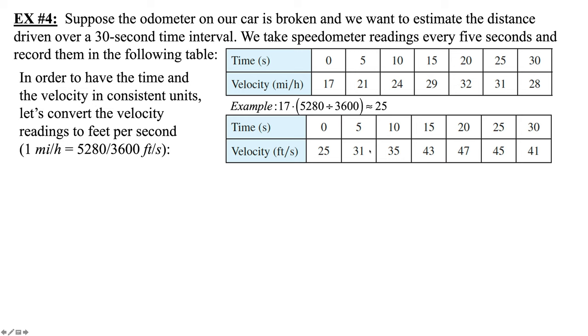21X, 31. 24X, 35. 29X, 43. 32X, 47. 31X, 45. 28X, 41. And so these, again, these are all approximations. Just rounding it to the nearest velocity, which is going to be now measured in feet per second. So now that my times are the same in my data, I can go ahead and estimate the distance we traveled.